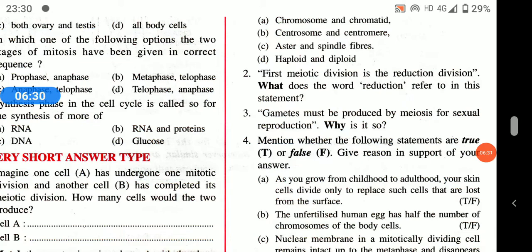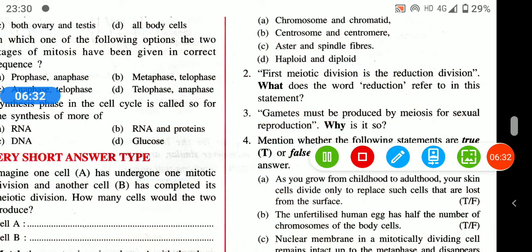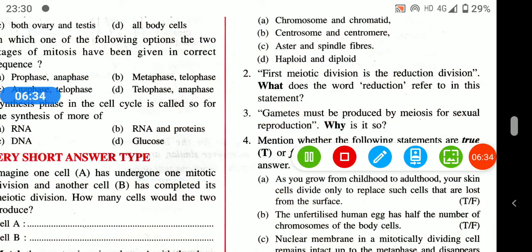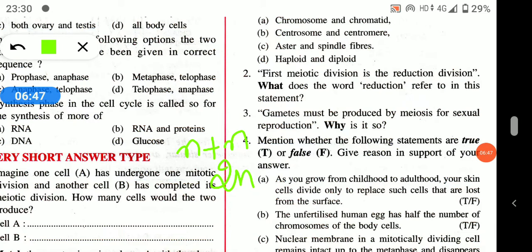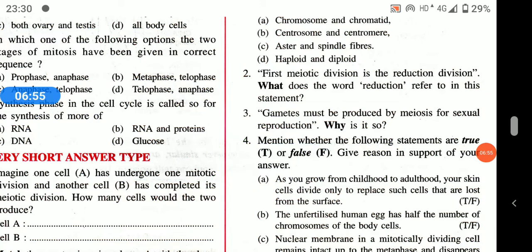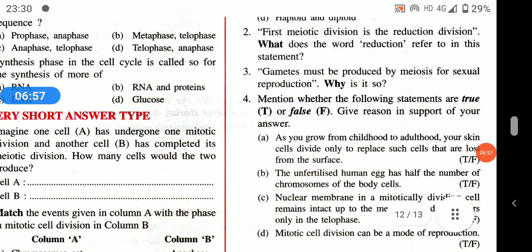Gametes must be produced by meiosis for sexual reproduction. This is because gametes are haploid in nature. When two gametes — like sperm and ovum — combine together, they form a diploid zygote. To maintain the ploidy of the zygote, both gametes must be haploid.